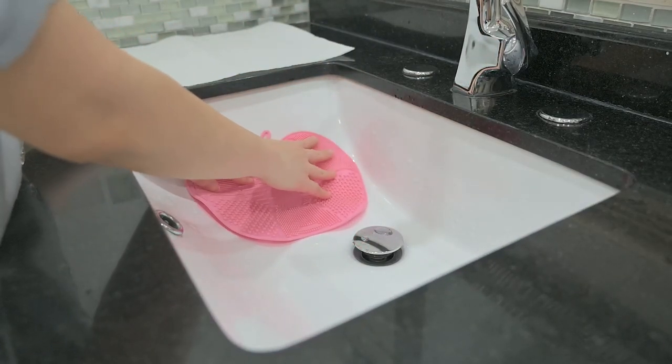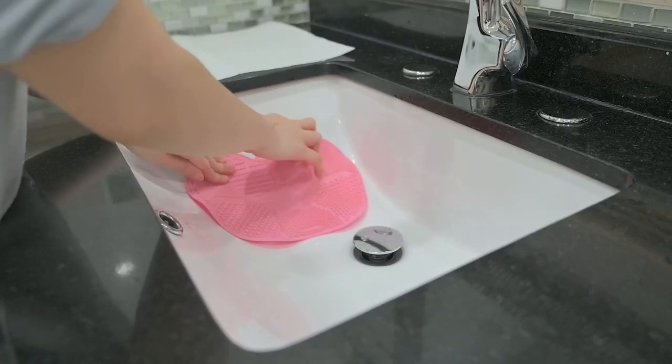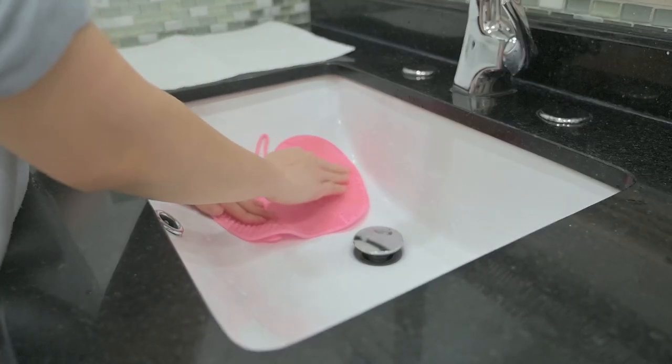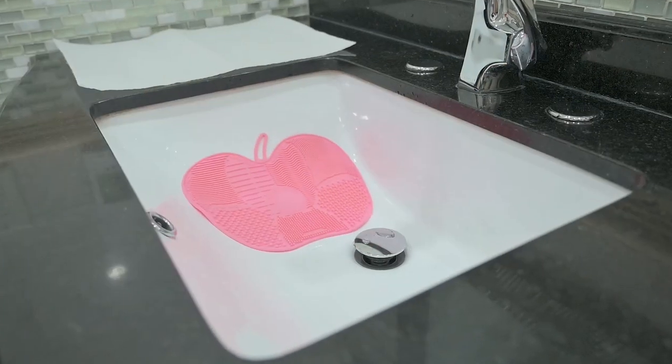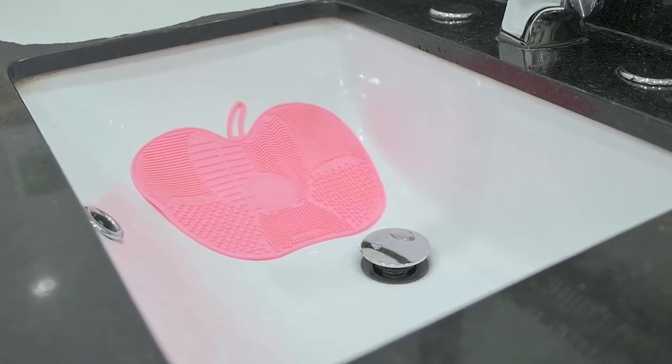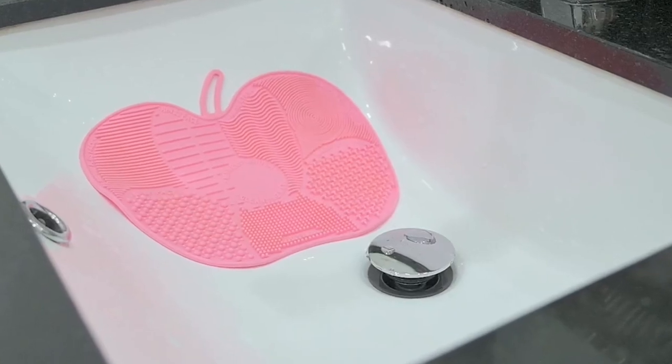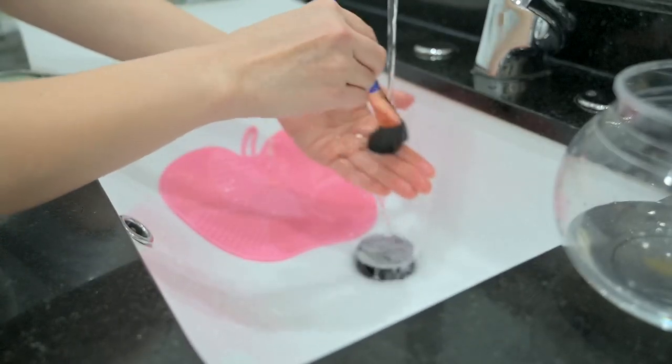This is what I use to clean the brushes with. I had this silicone cleaning mat for years. It's very convenient and durable. It has different textures for different types of brushes and it just suctions to the bottom of your sink. If you don't have this, you can just use the palm of your hand and it works just fine.